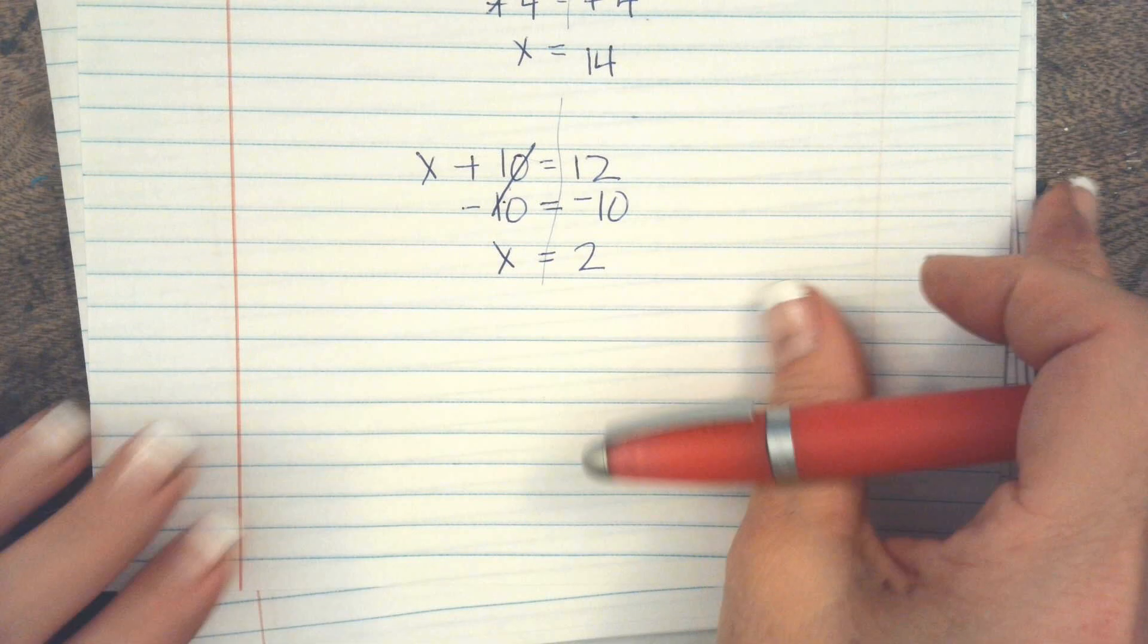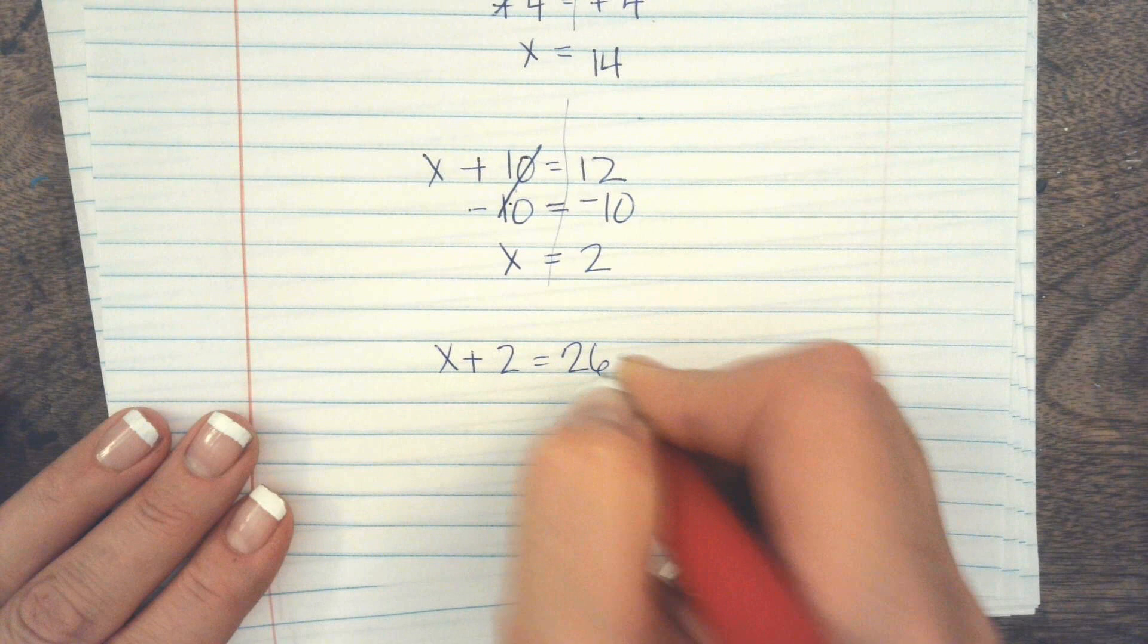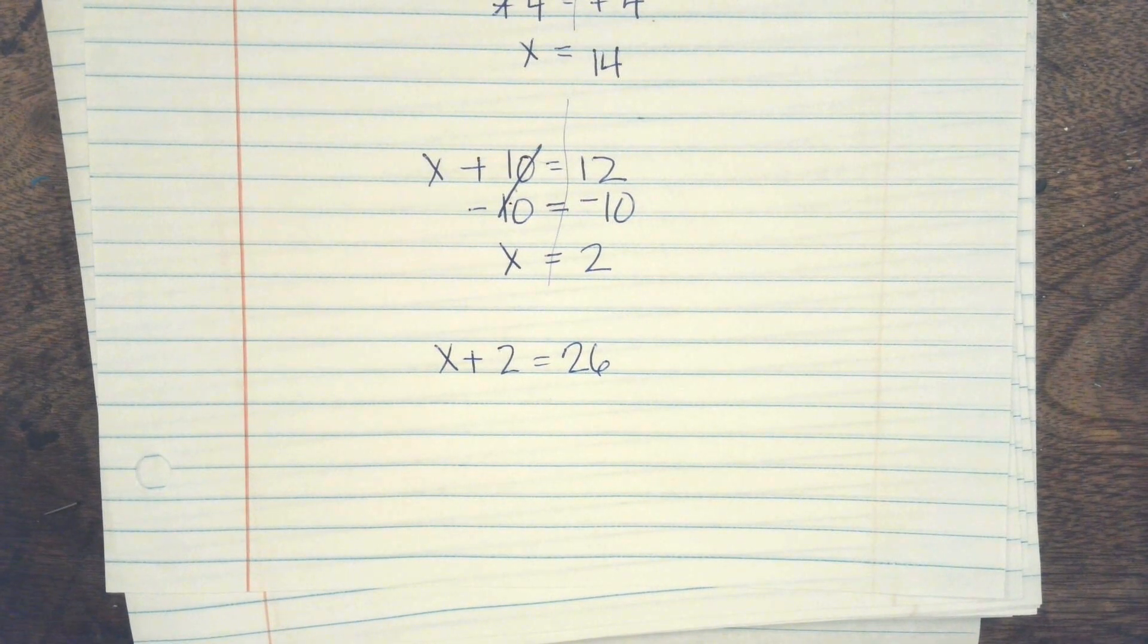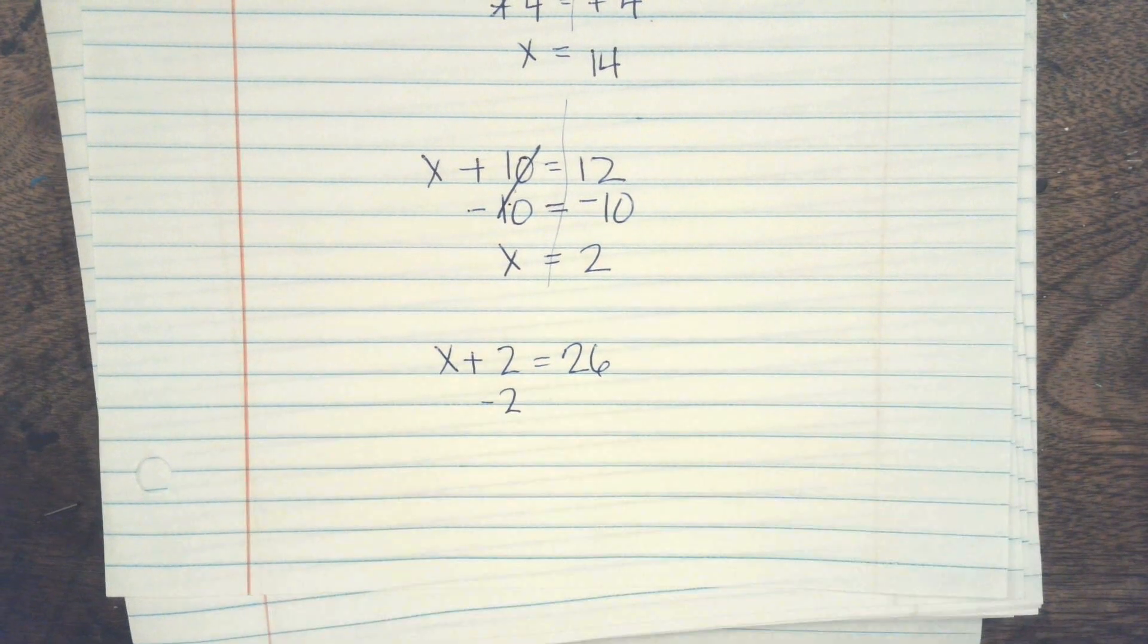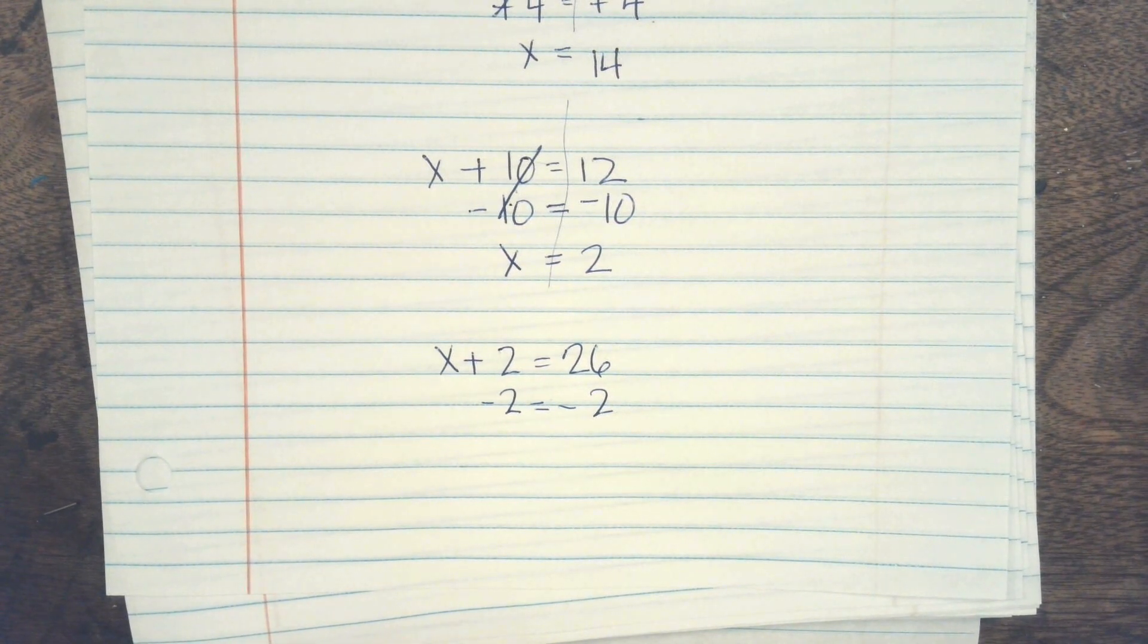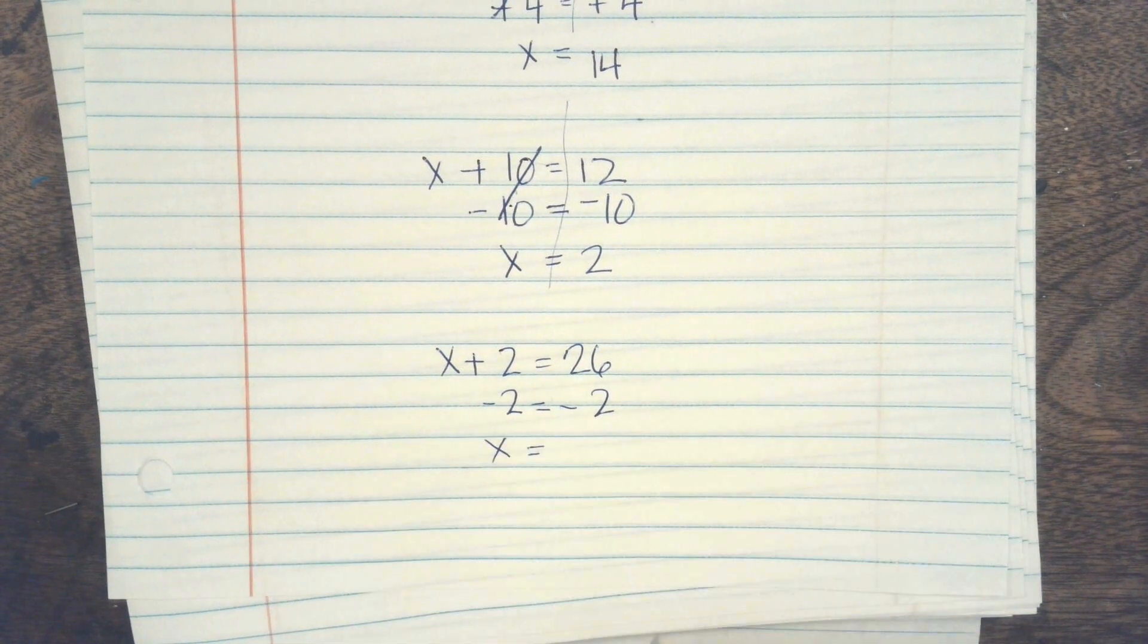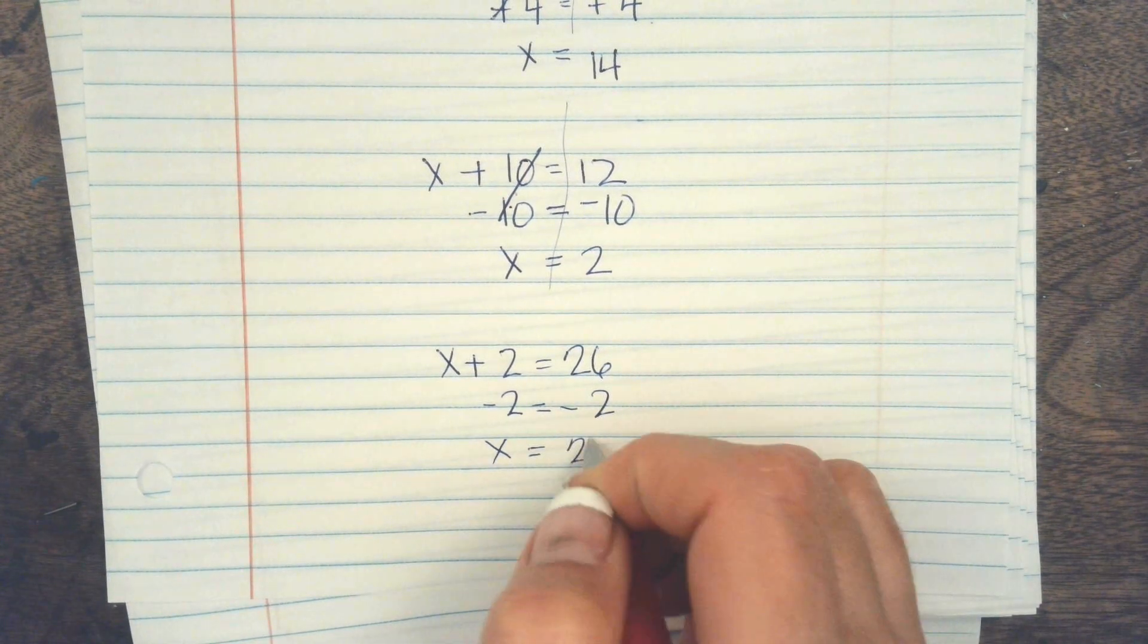All right. Let's try one of the other ones. x plus 2 equals 26. So what is my first step? You subtract 2. And then you also do that on the other side. Yep. And then what do I do? Bring down the x. Yep. And then subtract and it's 24. That's it.